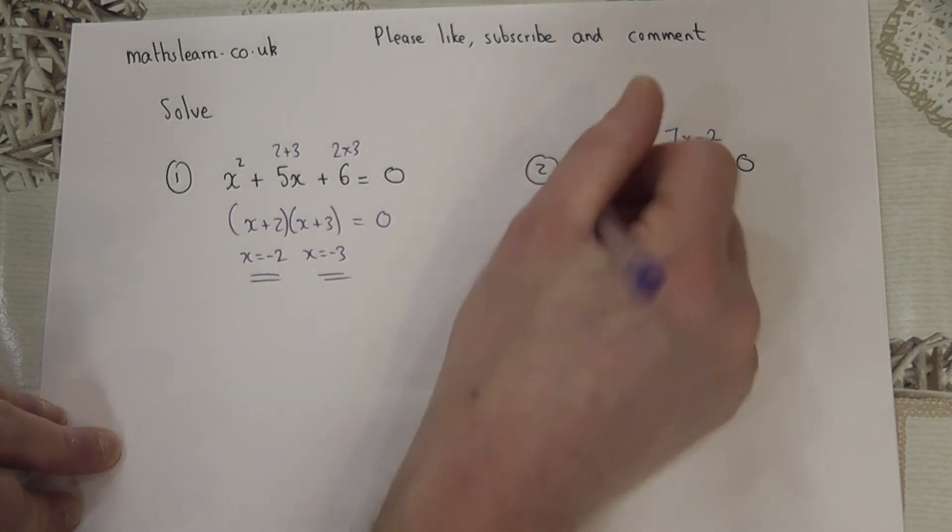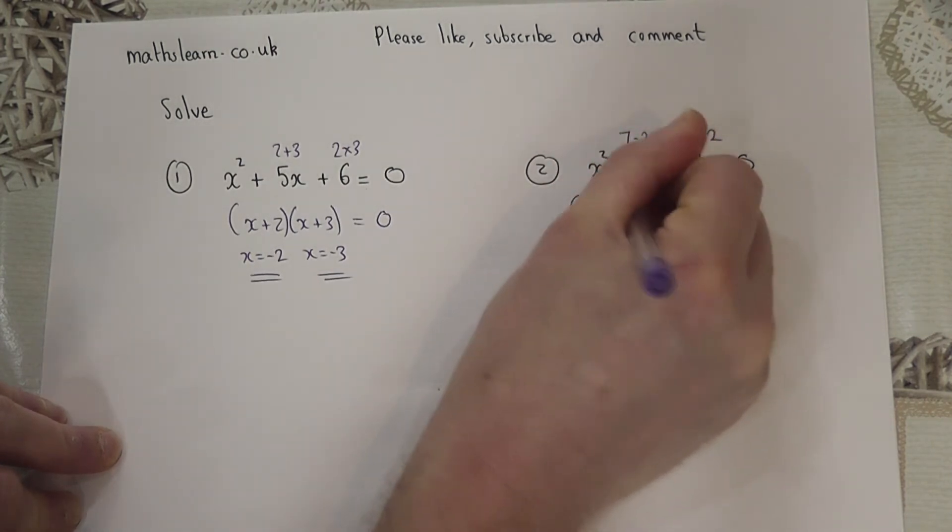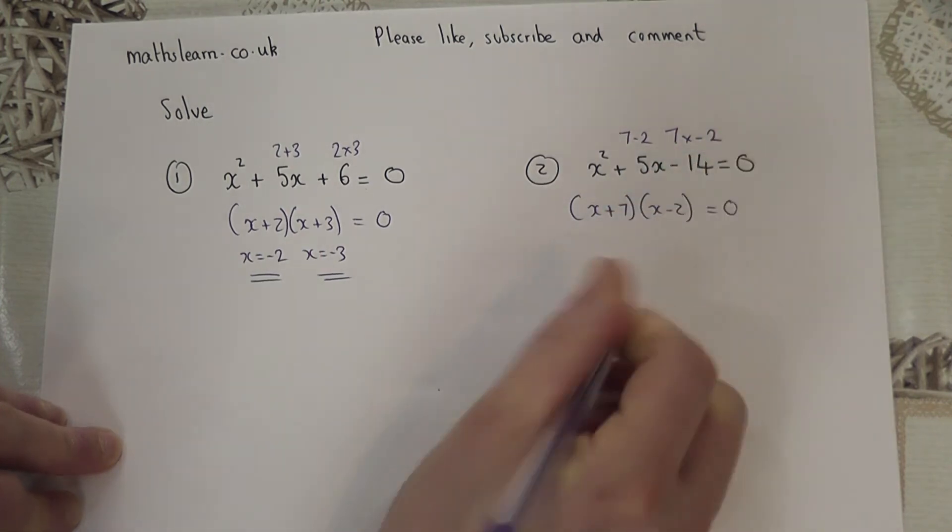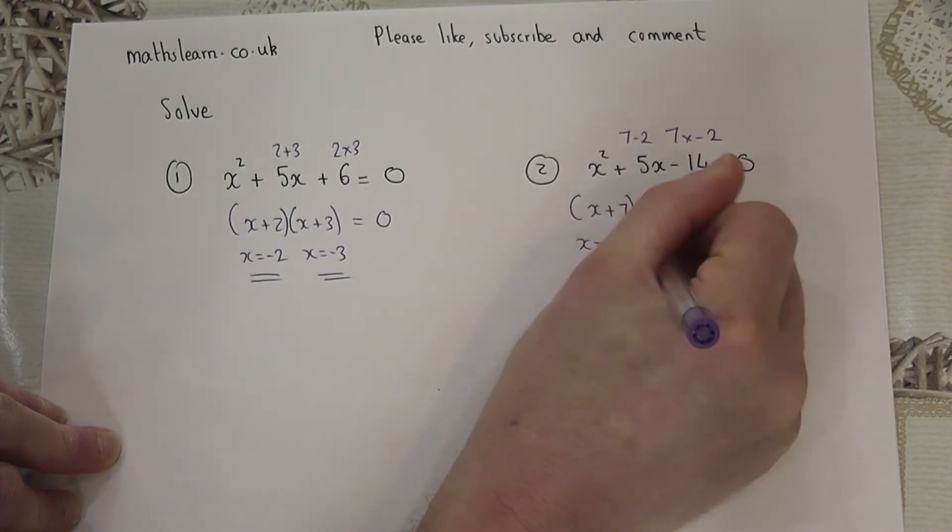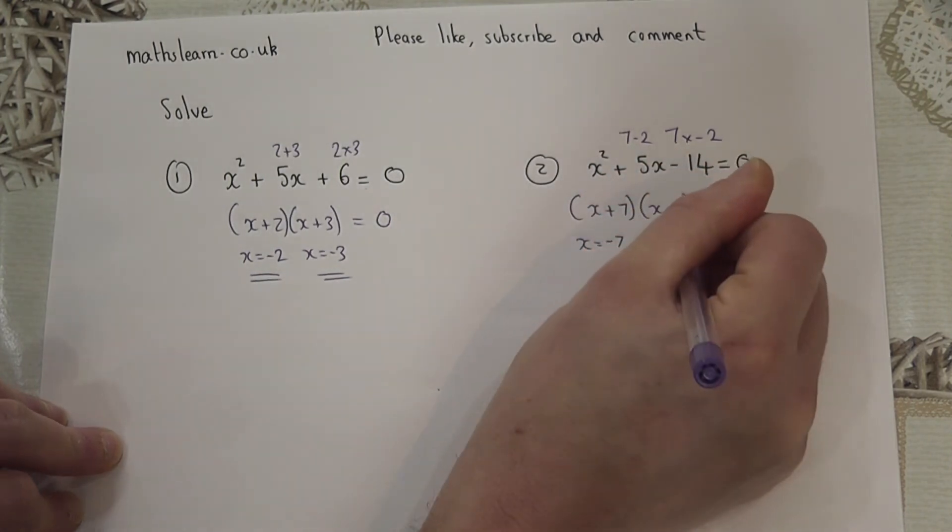So the factorized form is (x + 7)(x - 2) = 0. To make the bracket 0, x is either -7 or x equals +2.